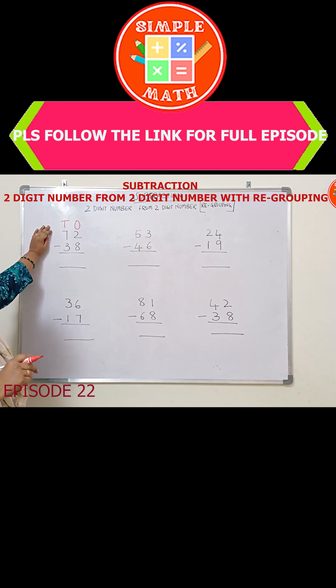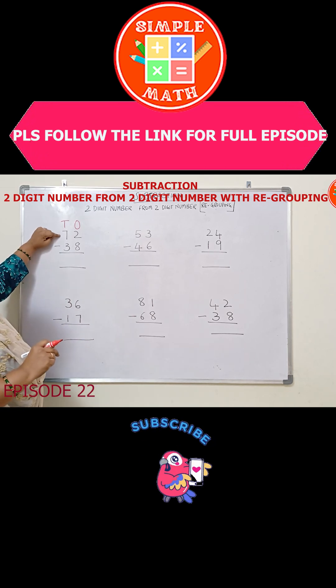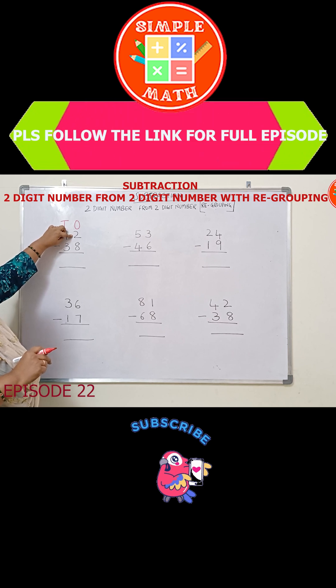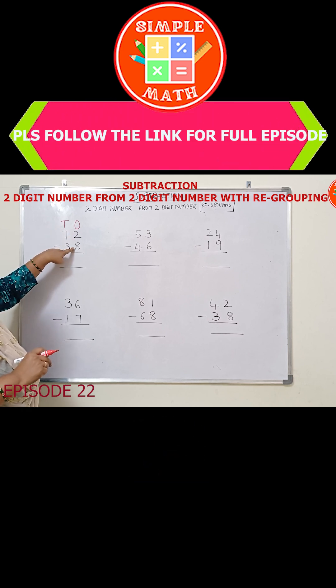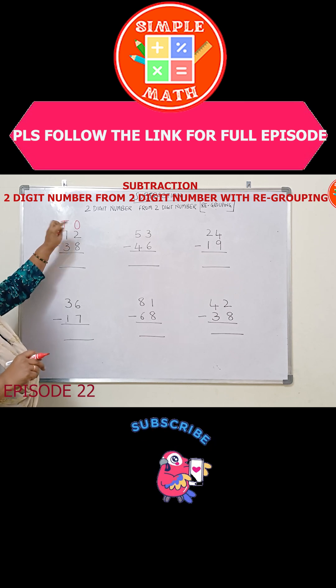When do you do regrouping or when do you do borrowing? When the number in the minuend is smaller than the number in the subtrahend. When you cannot take a big number from a small number, you do borrowing.